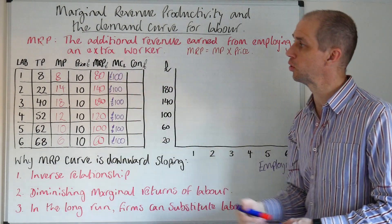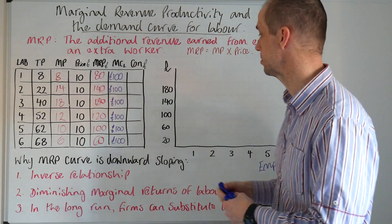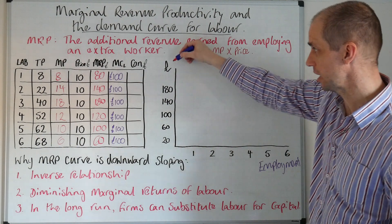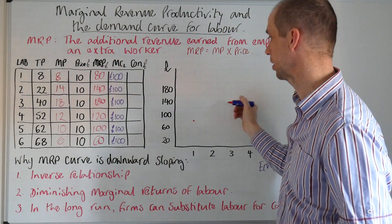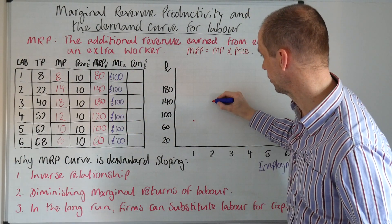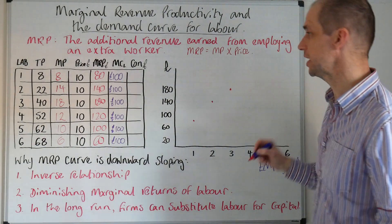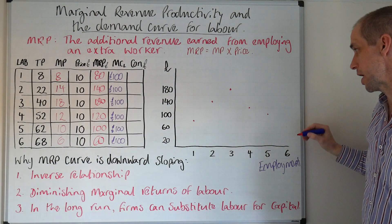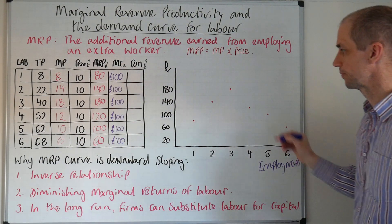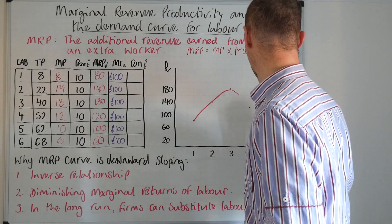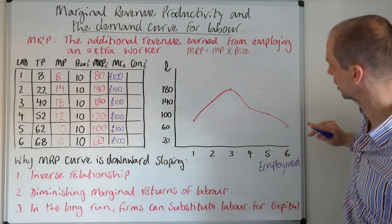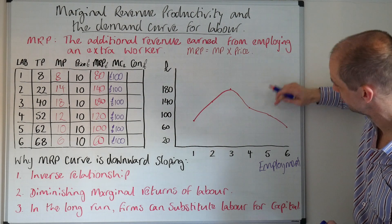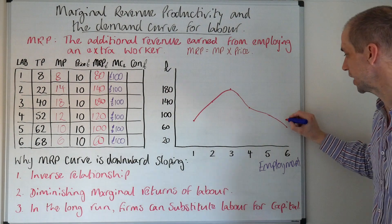Let's pause and consider how this would actually look as our demand curve for labour. For the first member of staff, there's a level of demand of £80. The next one, we go up to 140. Our third worker, we go up to 180. Our fourth, down to 120. Then our fifth worker down to 100, and then our sixth worker at just £60. So we can see that this MRP curve looks something like that — running through like so. This is our MRP curve.